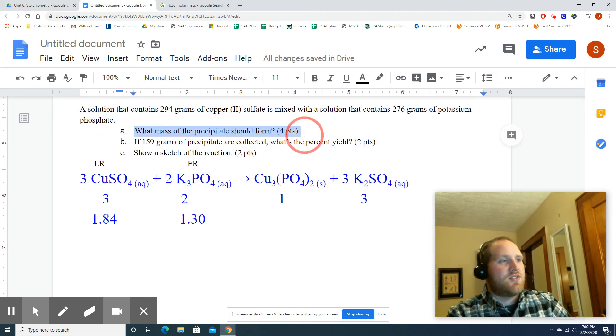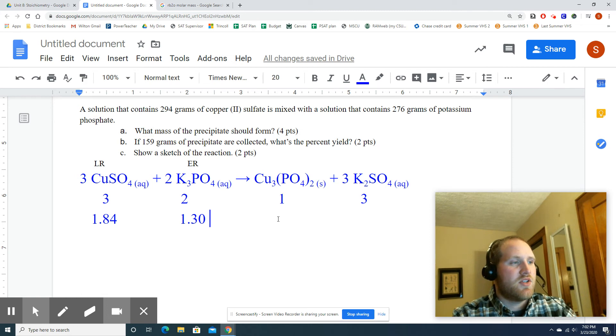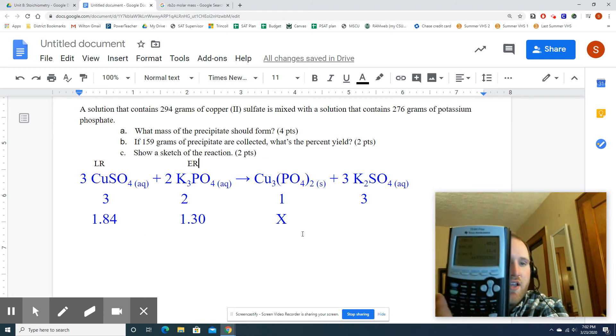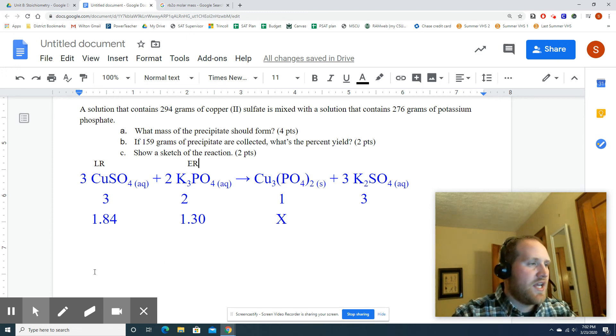All right. So notice in the problem, letter A says what mass of precipitate should form. Well, the precipitate is the solid product, which is my Cu3(PO4)2 solid. So here's where my X is going to go. I didn't ask about this, so we can ignore that for now. So we need to solve for X. Which of these do we use? We use the LR. You don't use this one because it would get you an erroneously high number. We're going to say 1.84 divided by 3, which we actually already did.